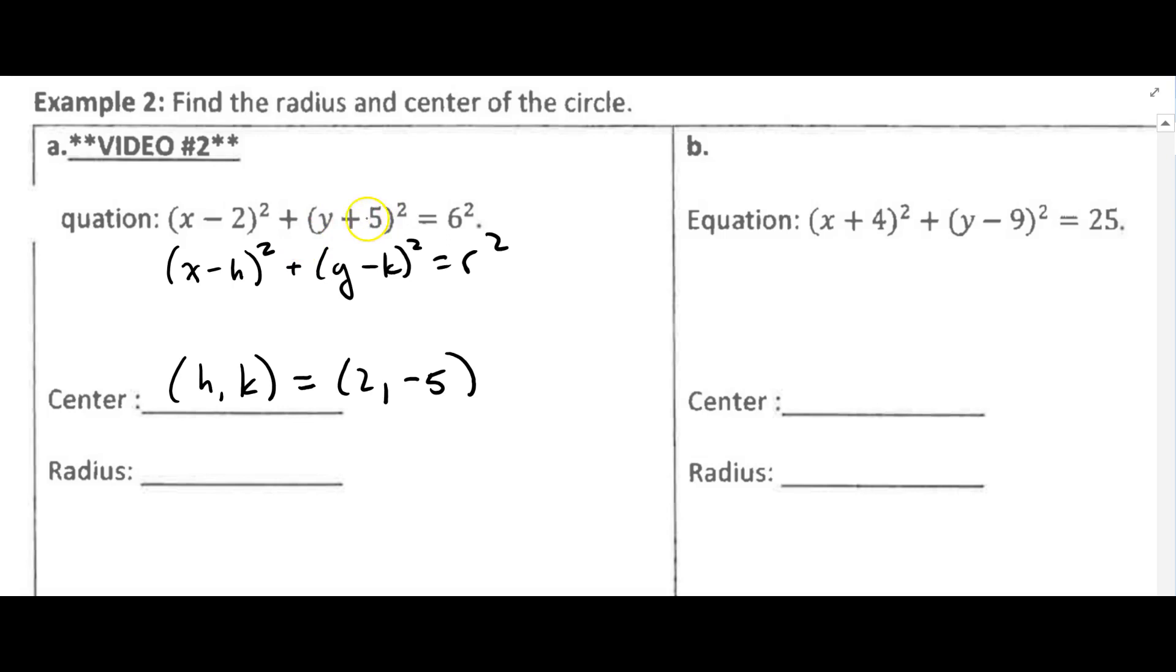Now remember, in order for this to be positive we're going to have to subtract a negative number. So if I do minus negative 5, that would give me plus 5.